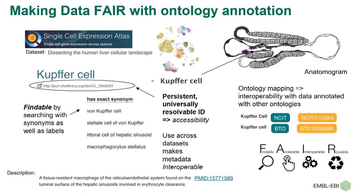Annotating with ontologies gives you a standard persistent link for the ontology term, a label you can search on, and a bunch of synonyms you can search on. Annotations might involve, in the single-cell context at the EBI, annotations to images — so a Kupffer cell is annotated on an image, giving another way to search. There are also links to other ontologies for mapping.